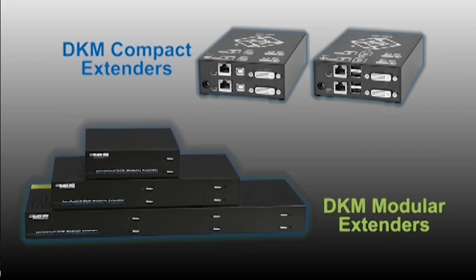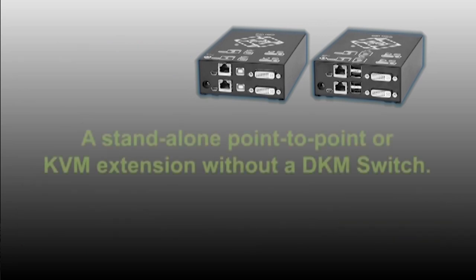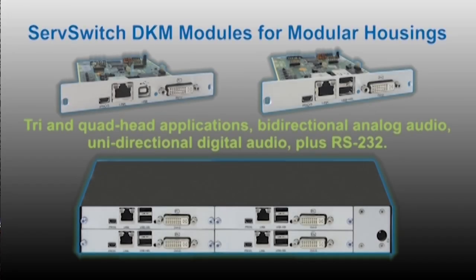The SurfSwitch DKM FX also has two different styles of transmitters and receivers. The first style is the compact version. The compact version will be able to cover almost 85-90% of your needs. We offer different variants such as single-head DVI, dual-head DVI, USB-HID for keyboard and mouse, and basic audio. If your application requires any type of other installation such as tri-head video or quad-head video with RS-232, or digital or analog audio support with RS-232, then you'd want to go with one of the modular transmitters and receivers, which can easily be configured here at Blackbox prior to shipment to your site.